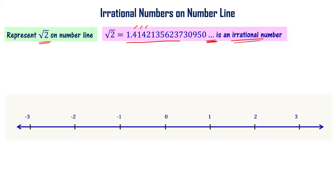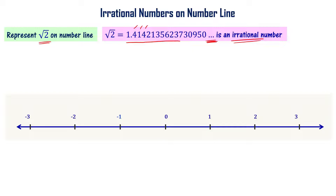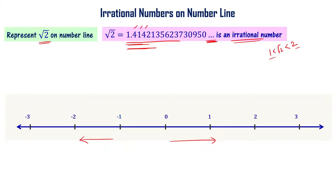On the number line we mark 0, 1, 2, 3, 4 and also −1, −2, −3. The value of √2 is 1.414..., so √2 is greater than 1 and smaller than 2. The exact position depends on the decimal expansion — 1.414, or 1.4142, or 1.41421 — each gives a slightly different position. So we need a trick to represent √2 exactly.